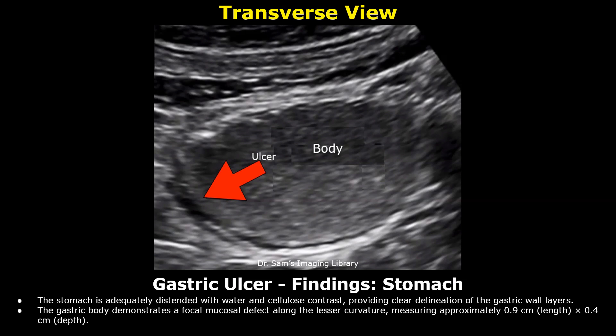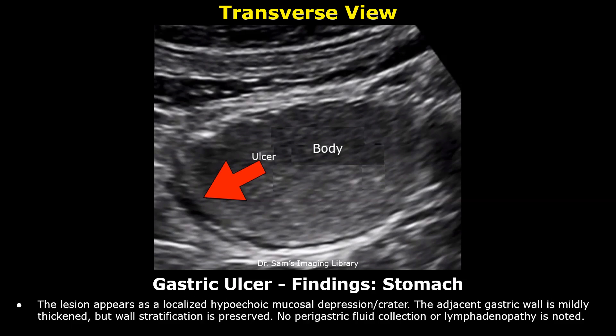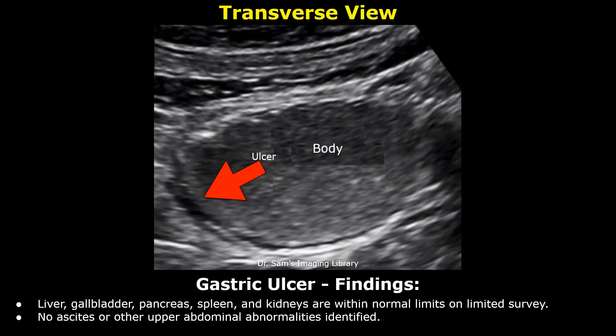These are the stomach findings. The stomach is adequately distended with water and cellulose contrast, providing clear delineation of the gastric wall layers. The gastric body demonstrates a focal mucosal defect along the lesser curvature, measuring approximately 0.9 cm in length and 0.4 cm in depth. The lesion appears as a localized hypoechoic mucosal depression or crater. The adjacent gastric wall is mildly thickened, but wall stratification is preserved. No perigastric fluid collection or lymphadenopathy is noted. Liver, gallbladder, pancreas, spleen, and kidneys are within normal limits on limited survey. No ascites or other upper abdominal abnormalities identified.